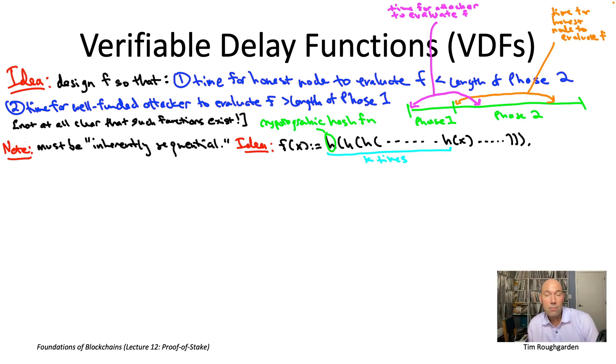So this is a good starting point. Certainly the obvious way to compute this function little f would be sequential. You just take x, you apply the hash function like SHA-256. You apply it again, you apply it again, you apply it again, etc. K times.